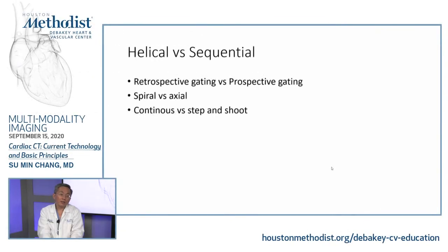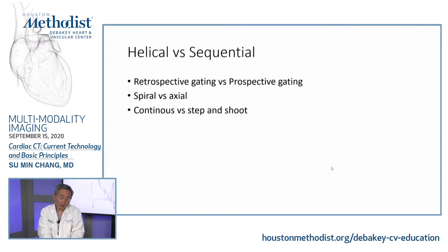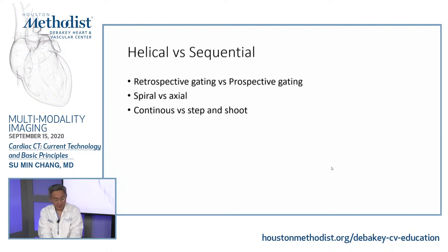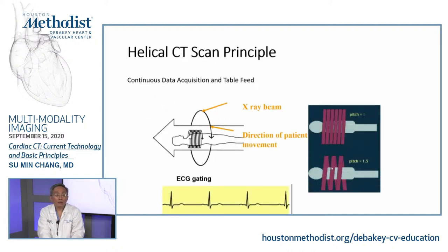The second concept is the difference between helical and sequential acquisition. You'll encounter different names: retrospective gating is the same as helical, prospective gating is sequential, spiral is helical, axial is the same as sequential, continuous is helical, and step-and-shoot is another name for sequential imaging.